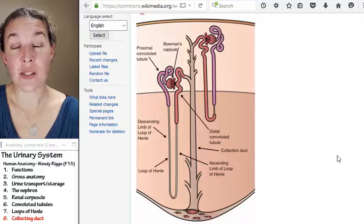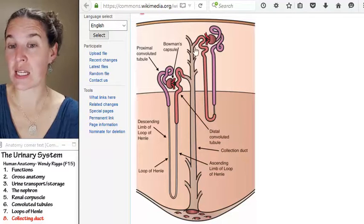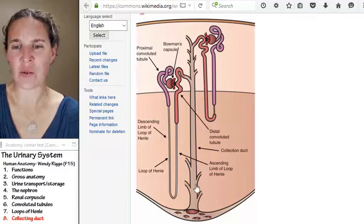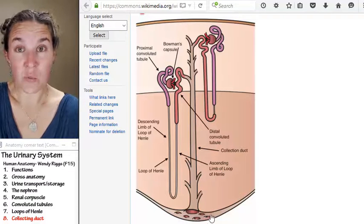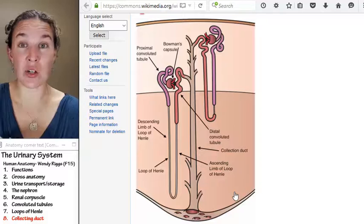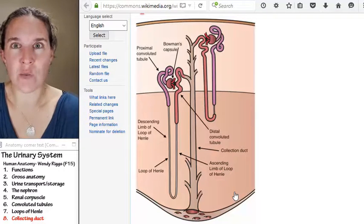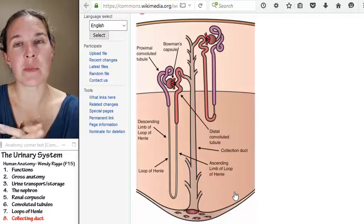The collecting duct is the one structure that is going to travel from the cortex of the kidney all the way down to the medulla and ultimately to the renal papilla, where we're going to dump urine. By the time it gets out of the collecting duct, it is urine, and we're going to dump that into the minor calyx.